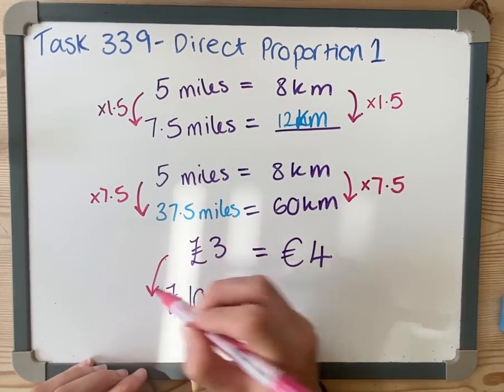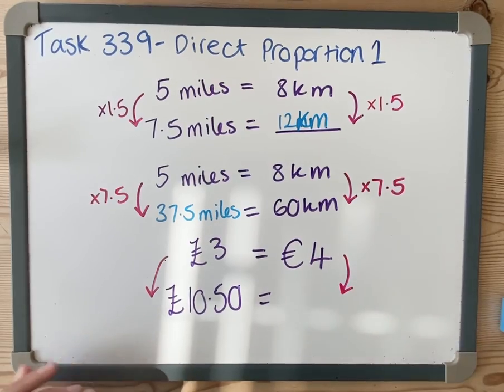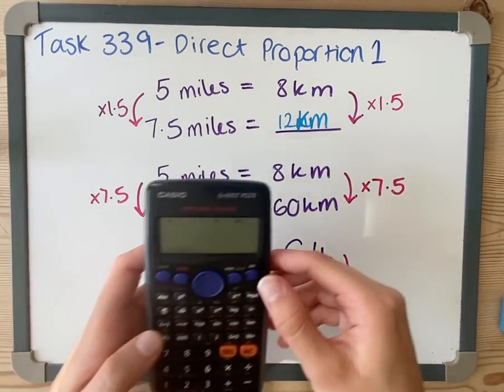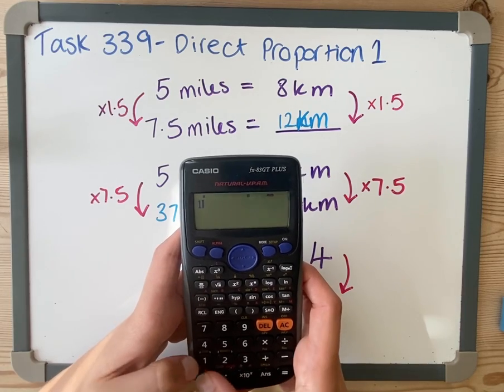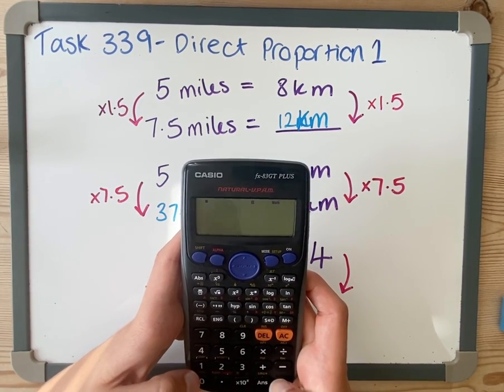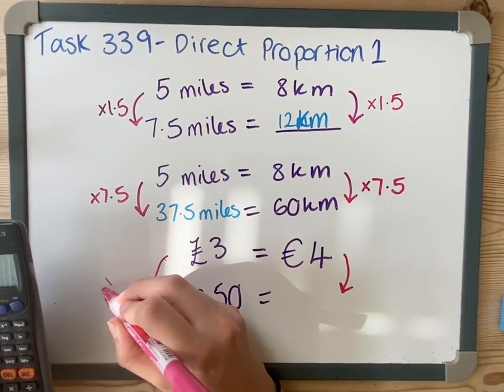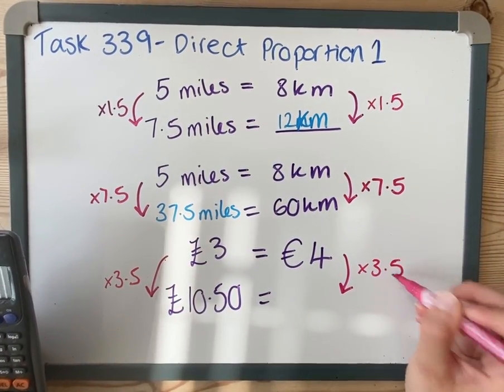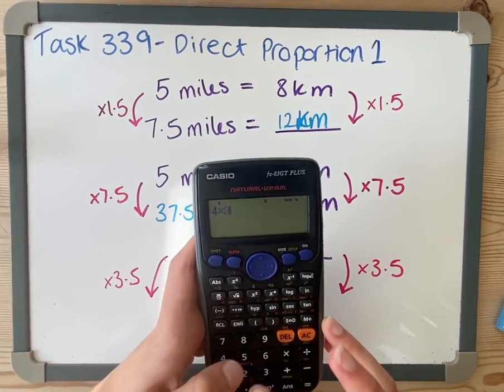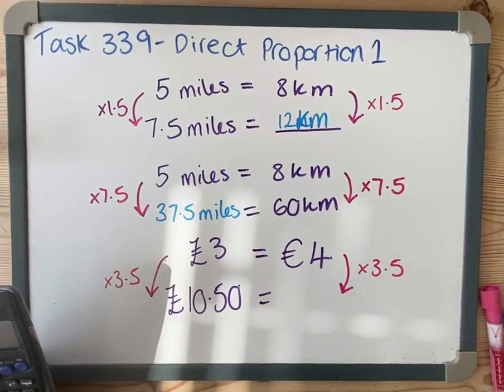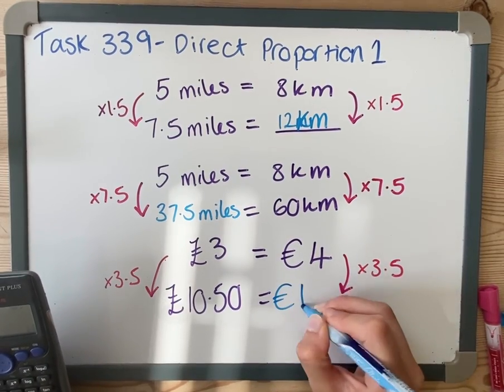Just the same: the relationship here has got to be the same. So I've got to work out what would I times three by to get to £10.50. To do that, I get my calculator and do 10.50 divided by 3, which is 3.5. So I'm going to times this by 3.5 as well, and 4 times 3.5 is 14 euros.